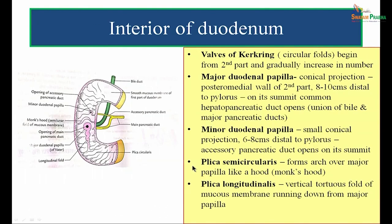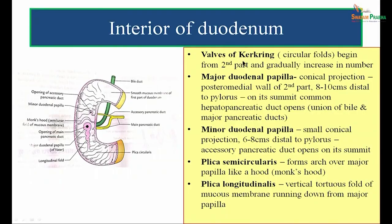Moving on to the interior of the duodenum: when you open a specimen of the duodenum and see the interior, you will observe the following structures. Valves of Kirchring are circular mucosal folds which serve to increase the surface area of the small intestine available for absorption. These valves of Kirchring are characteristically absent in the first part of the duodenum because the first part shares similar features with the stomach. They start appearing from the second part and gradually increase in number distally.